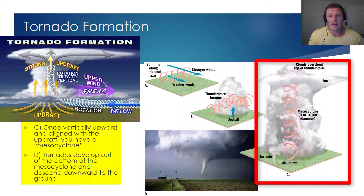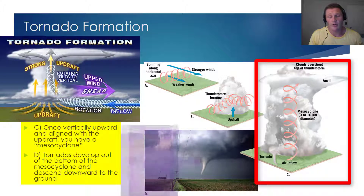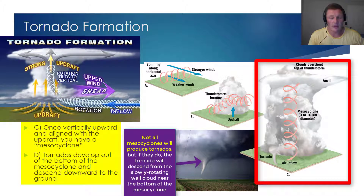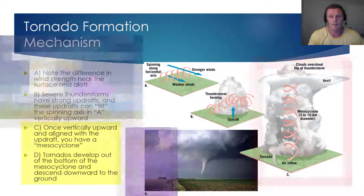Keep in mind that a mesocyclone is a huge vertical cylinder of rotating air, and the mesocyclone can be up to six miles wide. Now if a tornado develops from the mesocyclone, it'll descend towards Earth's surface from a slowly rotating wall cloud in the lower portion of the mesocyclone.